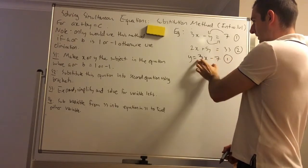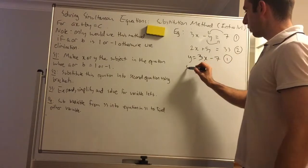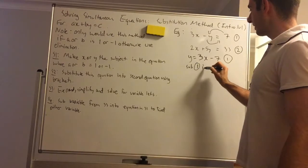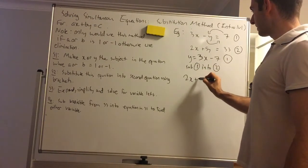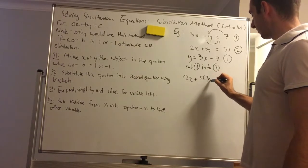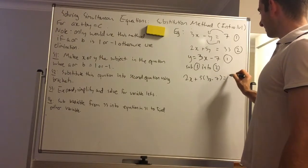I'm going to use brackets. So instead of writing y, I'm just going to put in brackets. So I'm going to write what I'm doing. Sub 1 into 2, so it's 2x plus 5, brackets, 3x minus 7 equals 33.